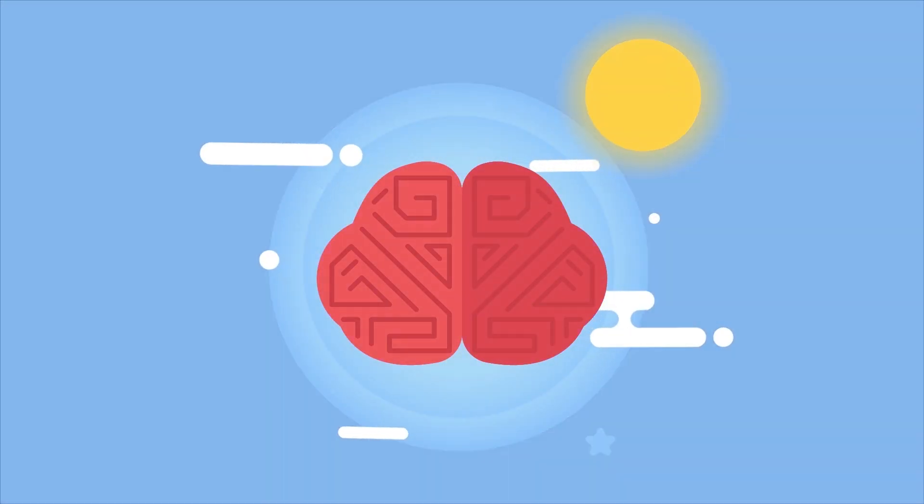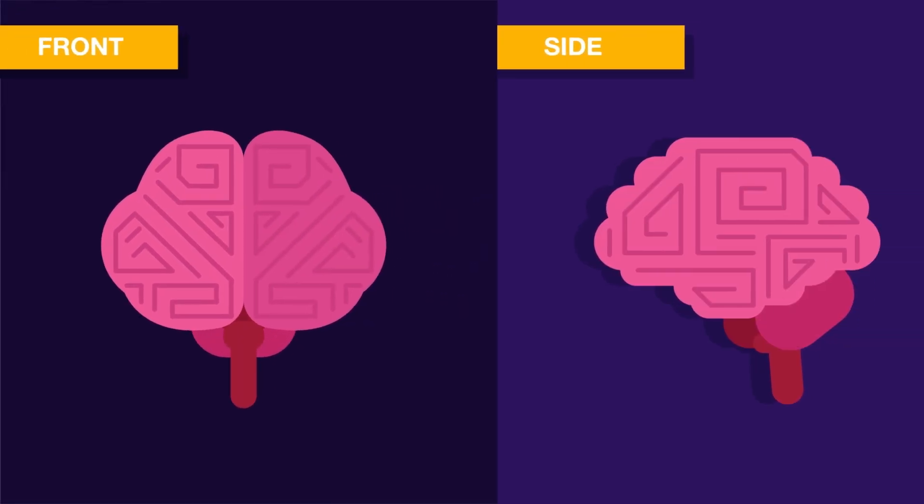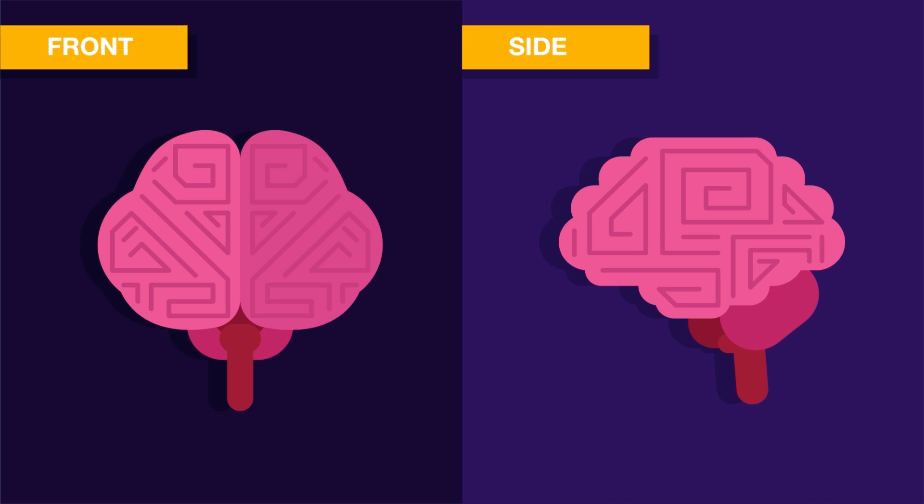Therefore, it never sleeps. Our brain can be divided into three main parts, the cerebrum, the cerebellum and brainstem.